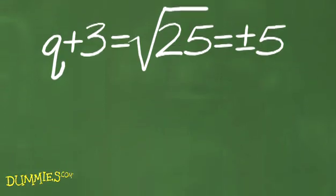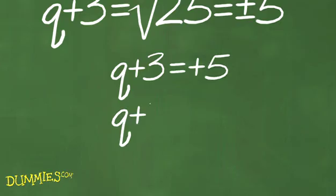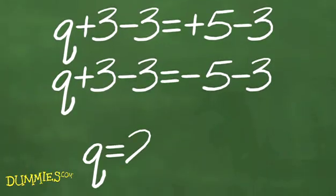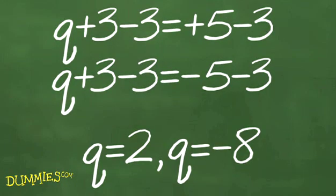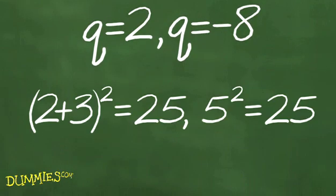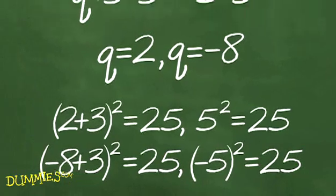Now we have two different linear equations to solve. q plus 3 equals plus 5 and q plus 3 equals negative 5. Subtracting 3 from each side of each equation gives you q equals 2 and q equals negative 8. This one definitely needs to be checked. Putting in the 2 for q equals 25 and putting in the negative 8 for q also equals 25. So yes, they both work.